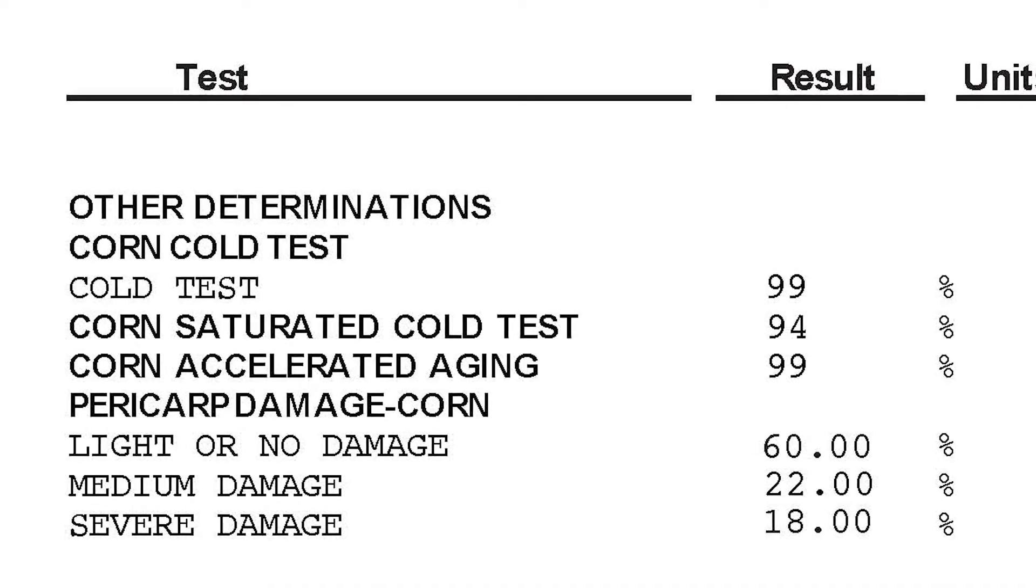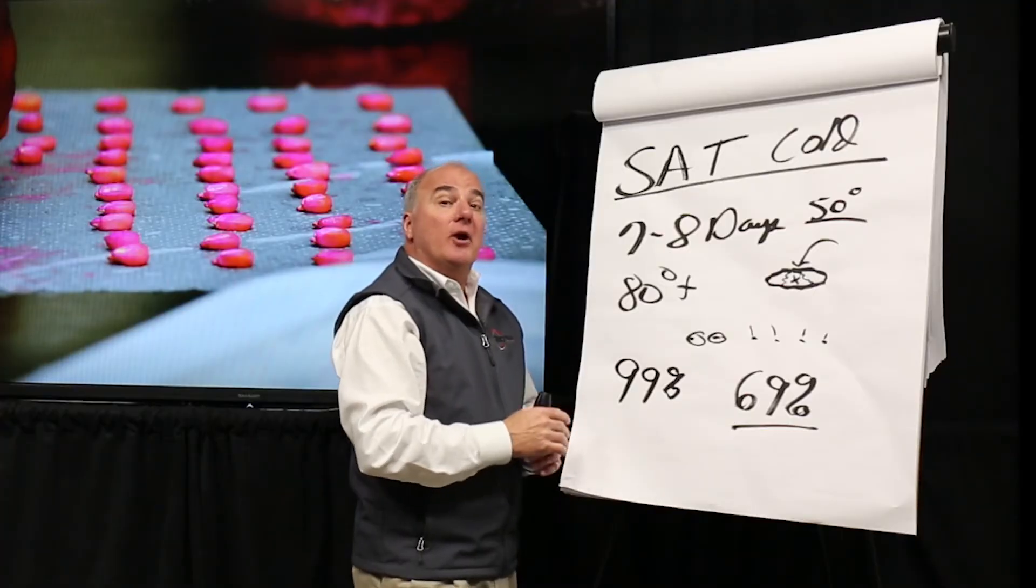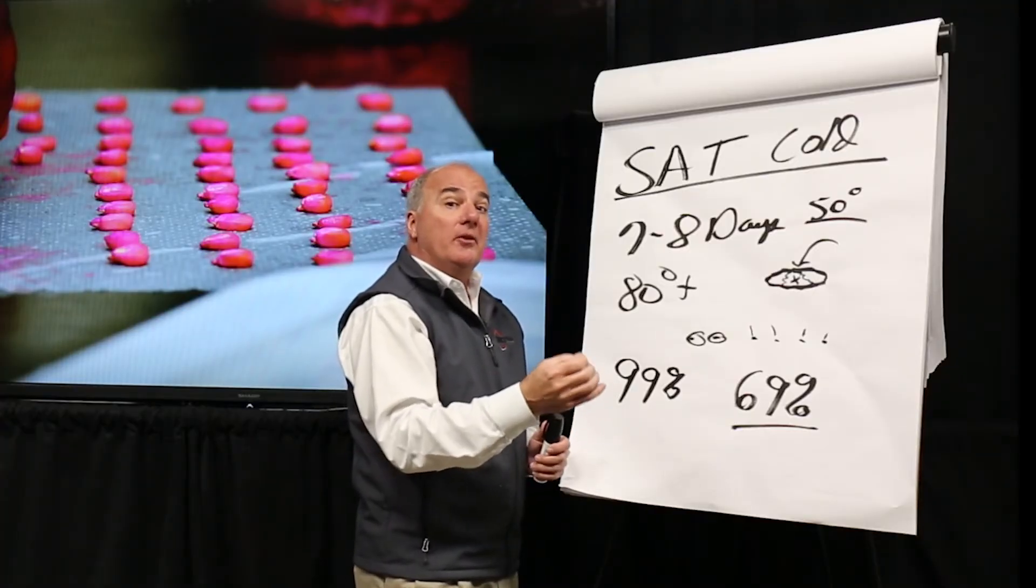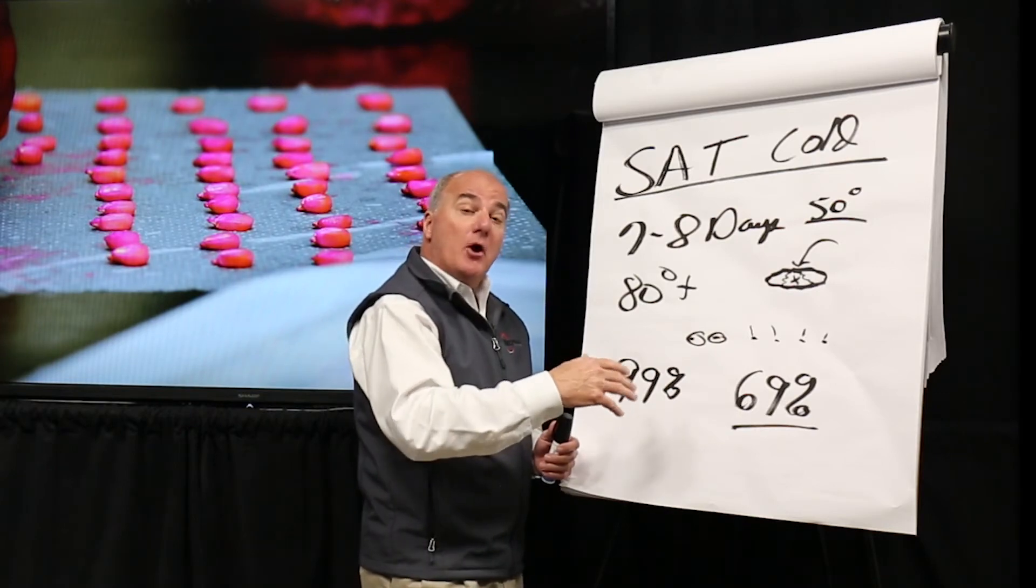If I end up with a high severe pericarp score, I'm going to either add more water to my starter that's going on the seed or I'm going to do no starter at all.